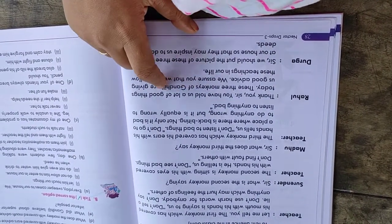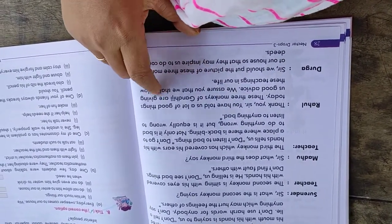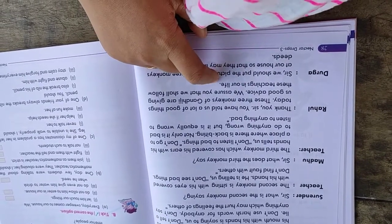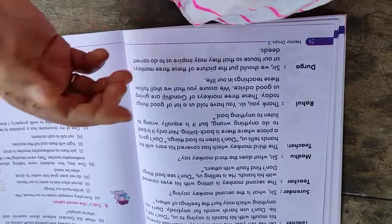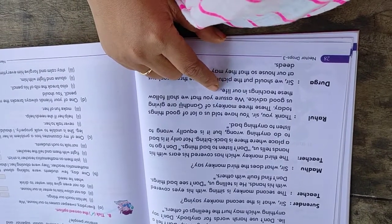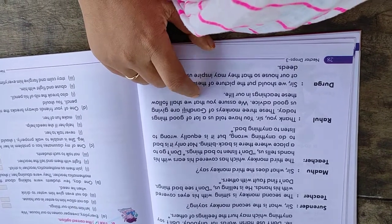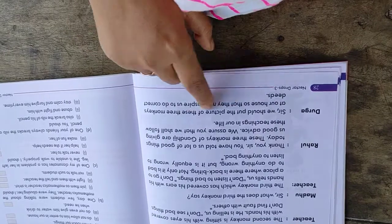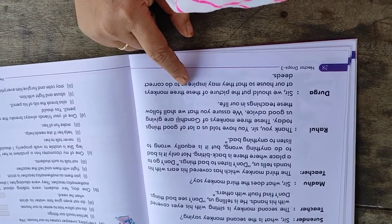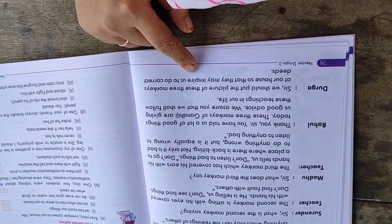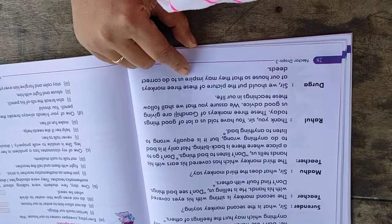Rahul says, Thank you, sir. You have told us a lot of good things today. These three monkeys of Gandhiji are giving us good advice. We assure you that we shall follow these teachings in our life. Durga says, sir, we should put the picture of these three monkeys at our house so that they may inspire us to do correct deeds.